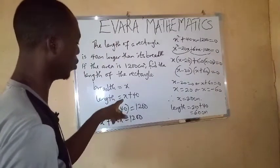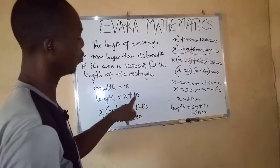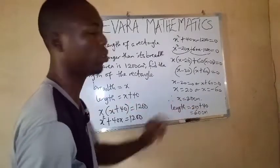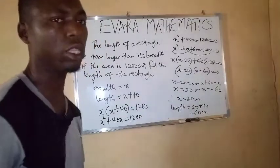Because from here, we are told that the length is x plus 40. So if x is 20, then length will be 20 plus 40, which is 60 centimeters. Thank you.